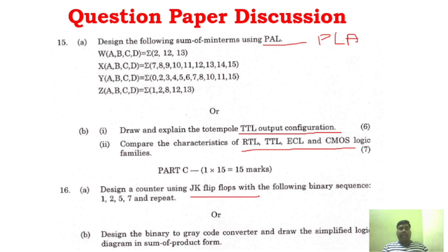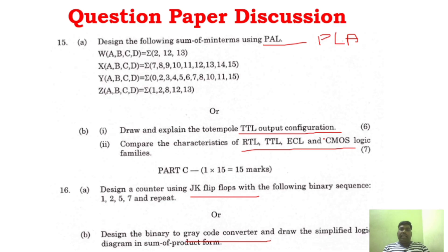Part C has a JK flip-flop question, which is Unit 3. Unit 2 includes binary to gray code converter — draw the circuit and explain. This is a very easy question in the question paper. By focusing on these sure-shot topics, you will be able to score very good marks.